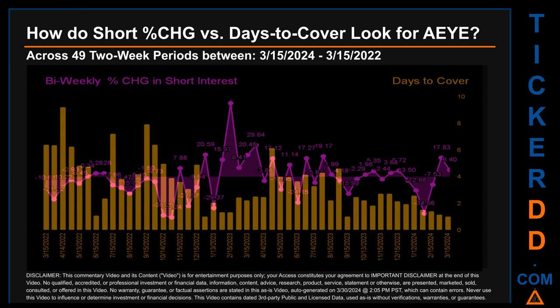Zooming out, I looked across 49 two-week snapshots from the latest found on March 15, 2024 to the oldest found on March 15, 2022. In the graph, I overlaid weekly percentage change in short interest against days to cover across these 49 snapshots. The average percentage change of short interest was about minus 1.71%. The largest percentage increase was 68.98%, occurring once on February 15, 2023 settlement date. The largest percentage decrease was minus 38.24%, occurring once on October 31, 2022 settlement date.